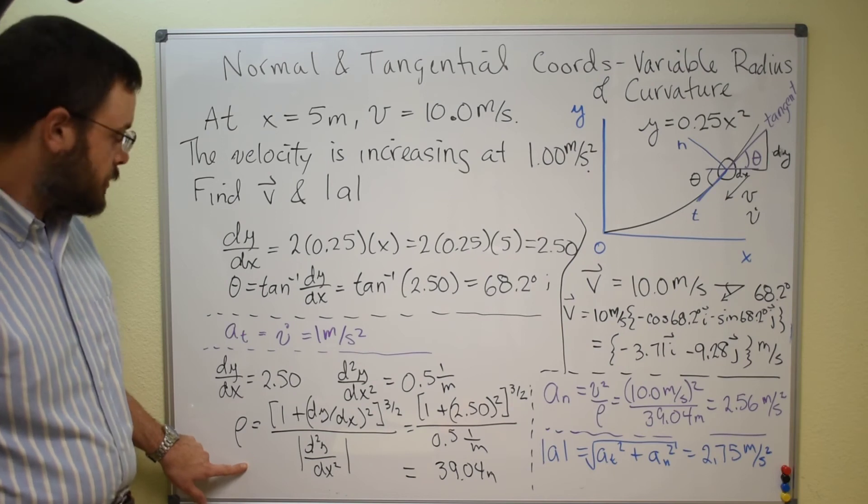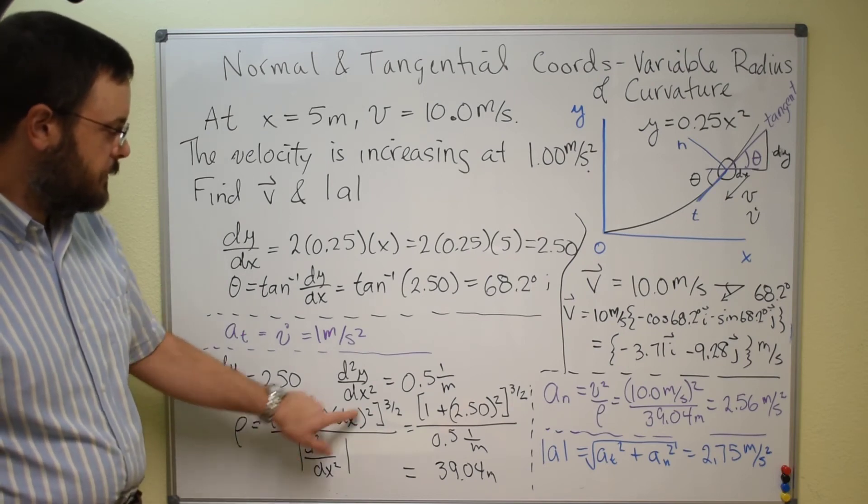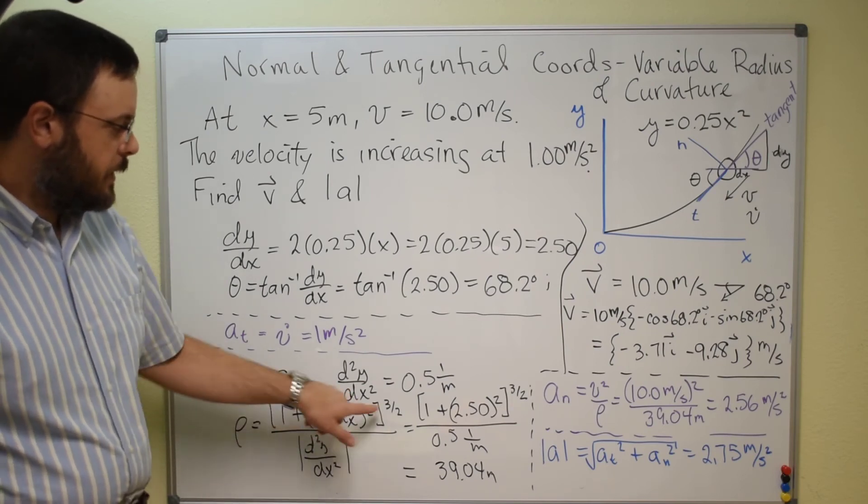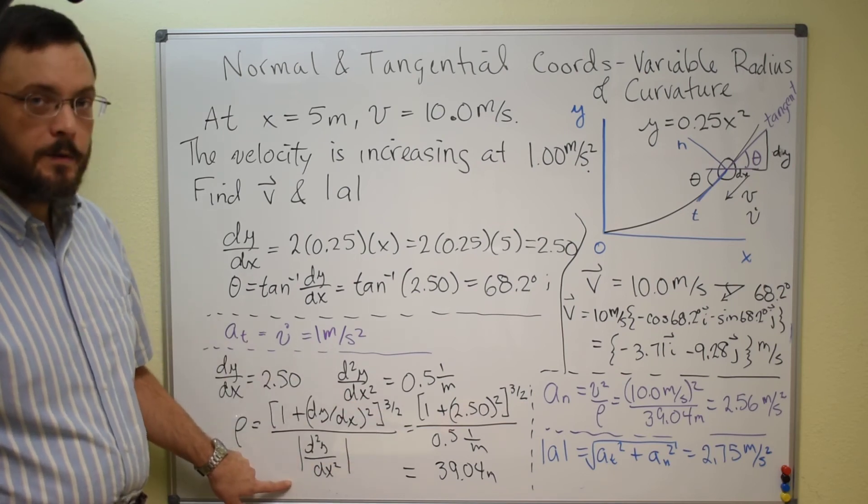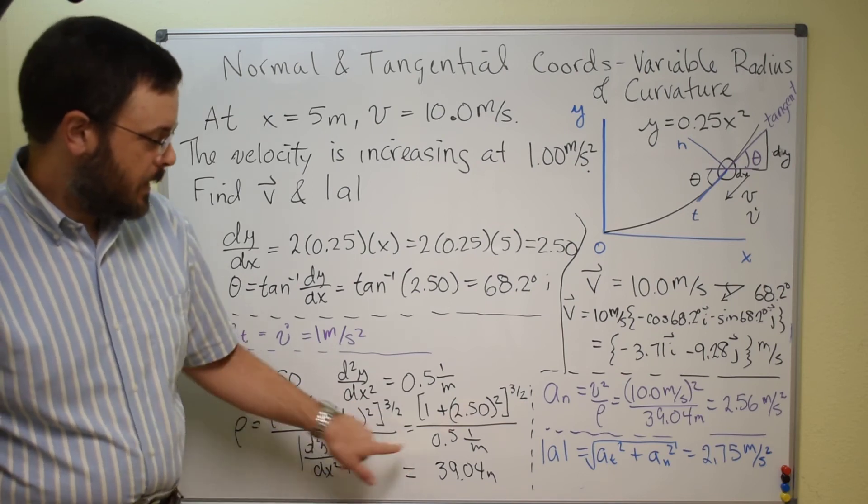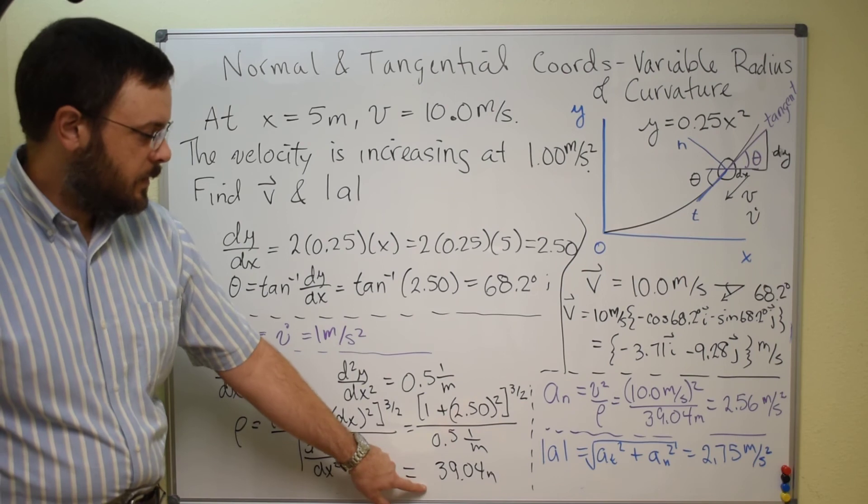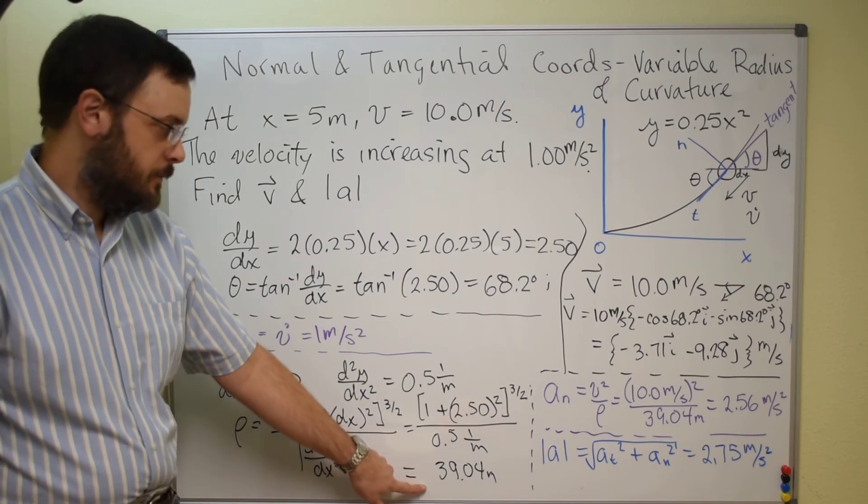Plug it into your radius of curvature formula, 1 plus first derivative squared, that whole quantity to the 3 halves divided by the absolute value of the second derivative. Plug in all your numbers and you get 39.04 meters for the radius of curvature.